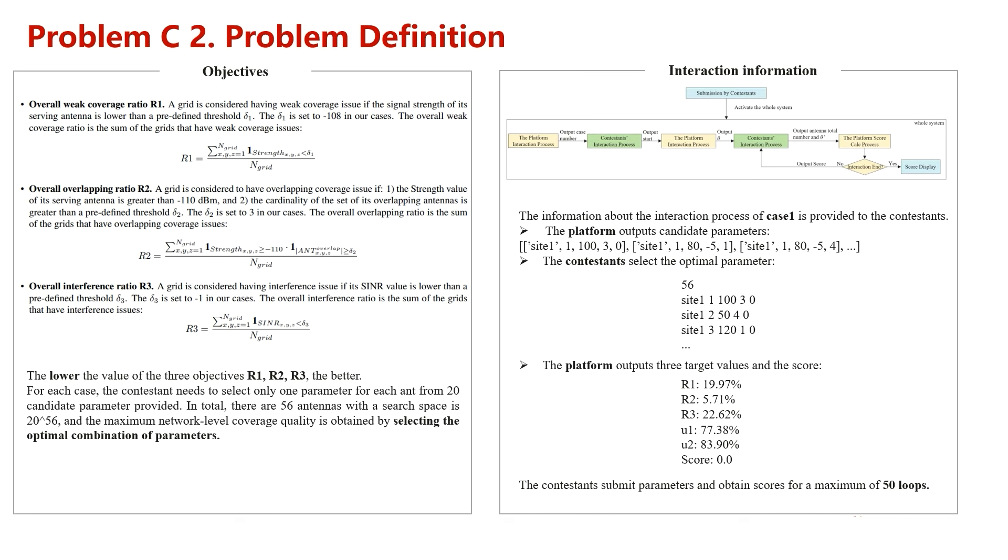Now, we are looking at the objectives. There are three objectives: overall weak coverage ratio, overall overlapping ratio, and overall interference ratio. You are expected to find the lowest value of each objective. Each objective is sum of the grid level objective. Let's look at the weak coverage ratio. If a grid's strongest signal is lower than a threshold, it is weakly covered. And the ratio is the number of weakly covered grids over the number of all grids.